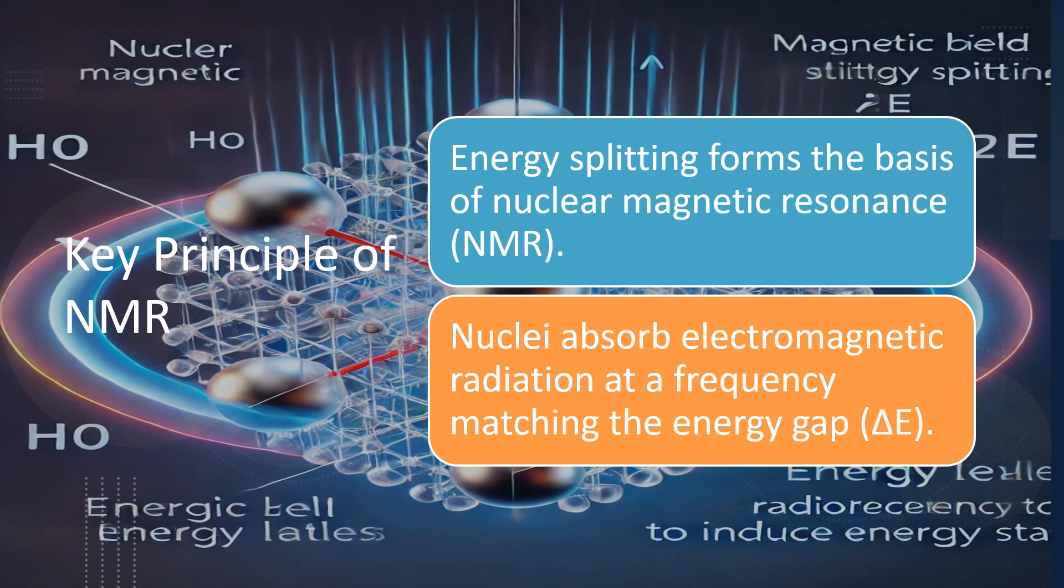The key principle of NMR (Nuclear Magnetic Resonance) is resonance. When nuclei in a magnetic field are exposed to a specific radio frequency, they absorb energy and transition between energy levels. This absorption creates a detectable signal. By analyzing these signals, scientists can learn about the structure and environment of molecules. NMR is like a molecular microscope, revealing details invisible to the naked eye.